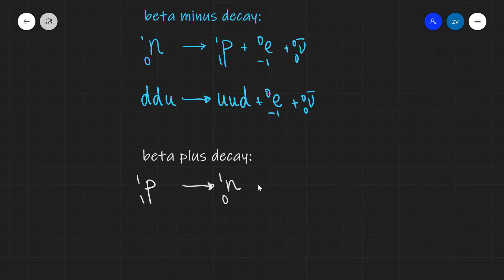So if only there was a particle with very similar or exactly the same properties as an electron, but positive. Well, of course we do. And this is the positron. So we can add a little positron over here. So it'll be plus one zero.